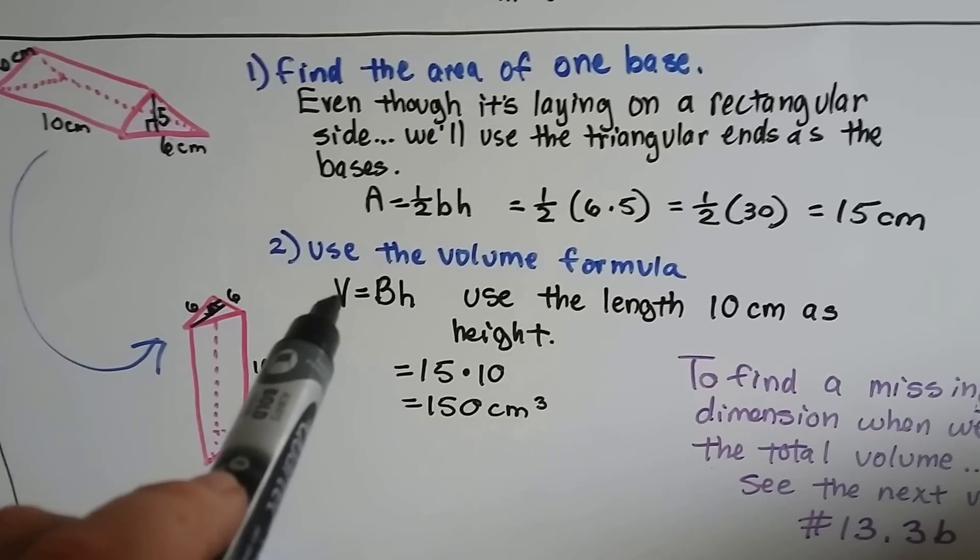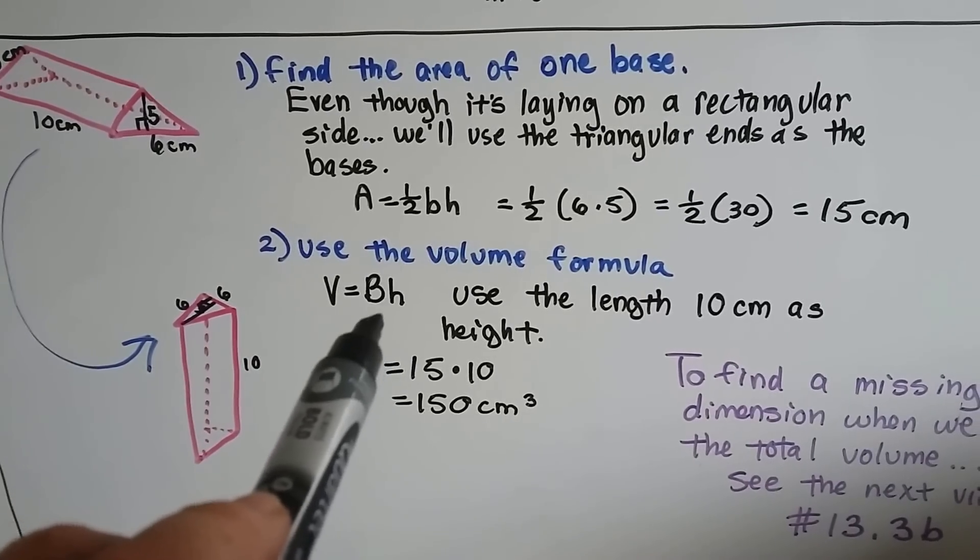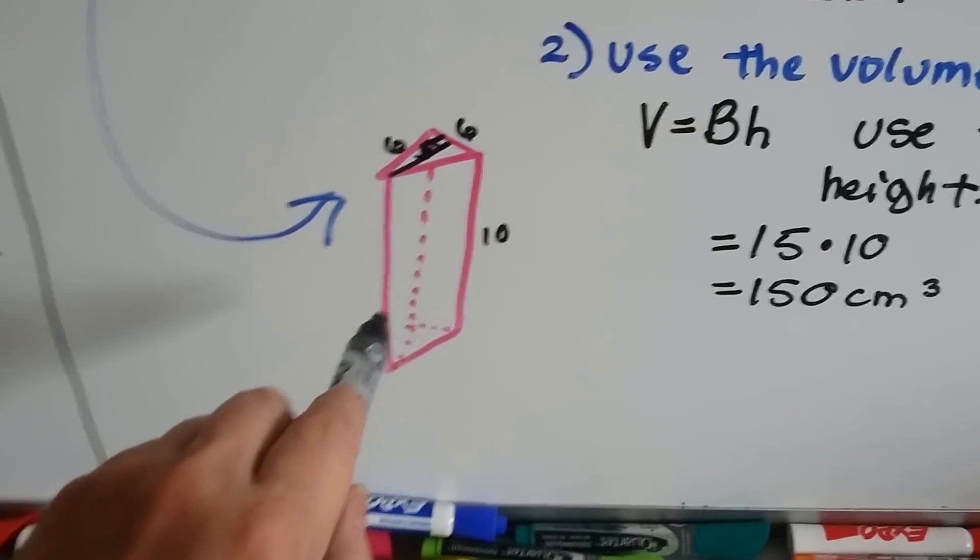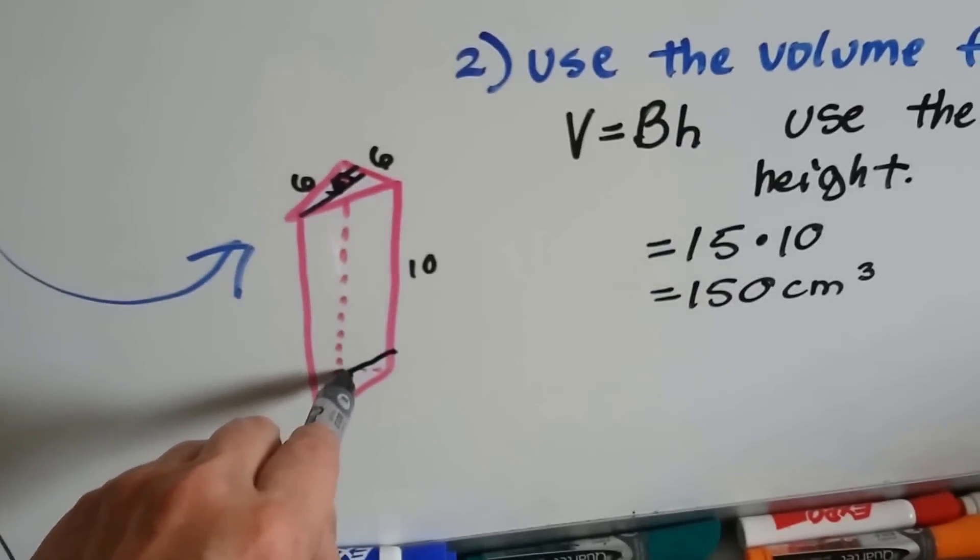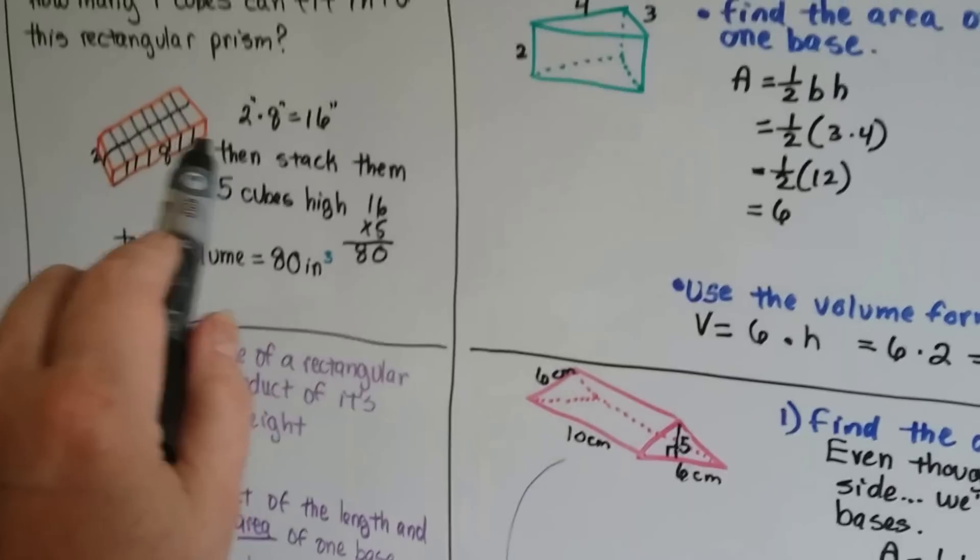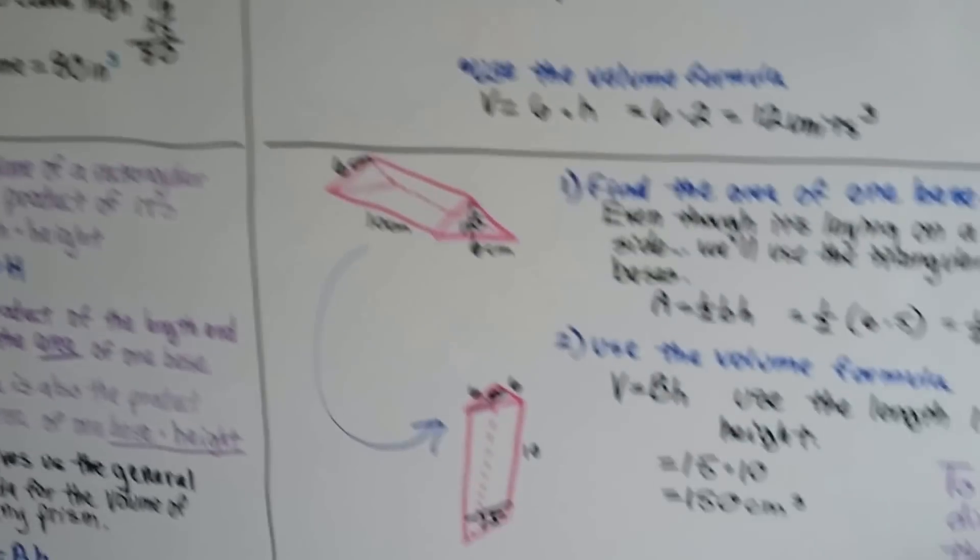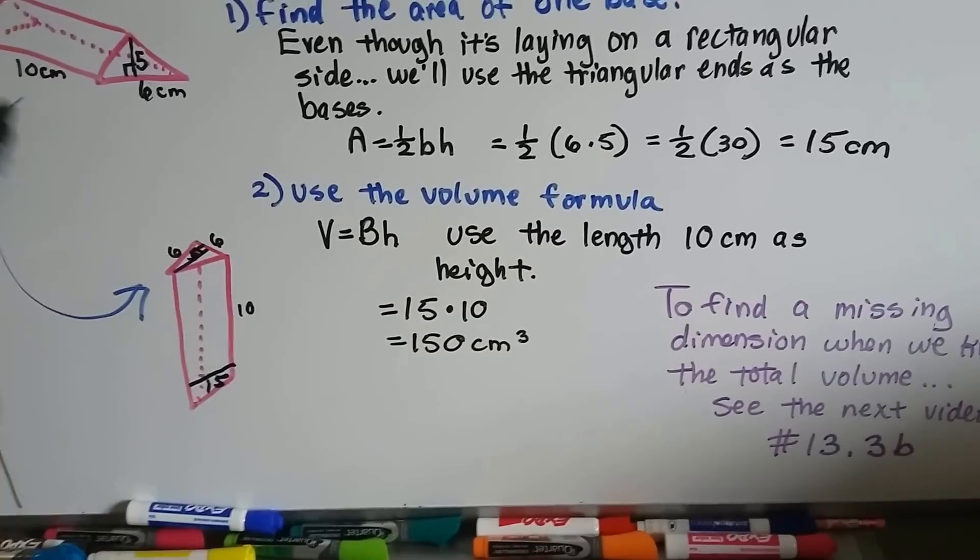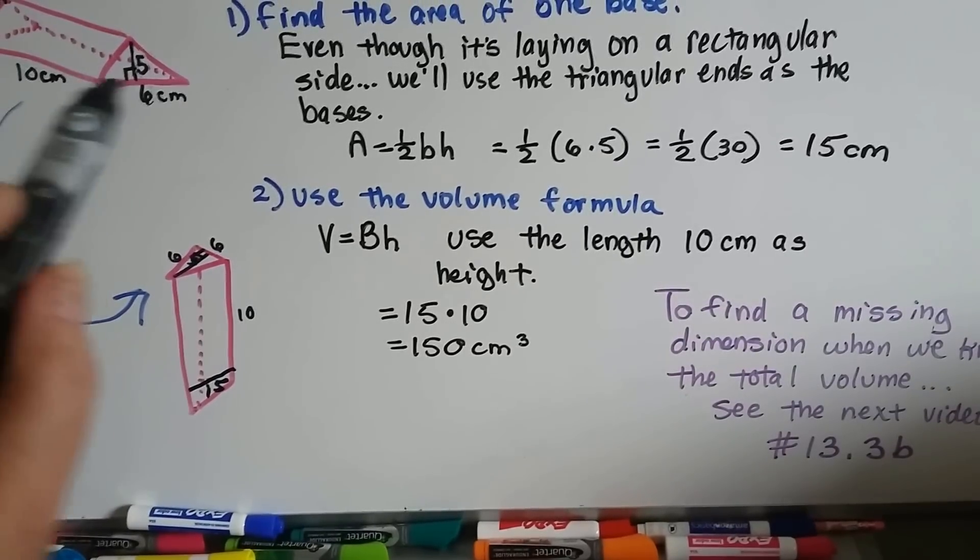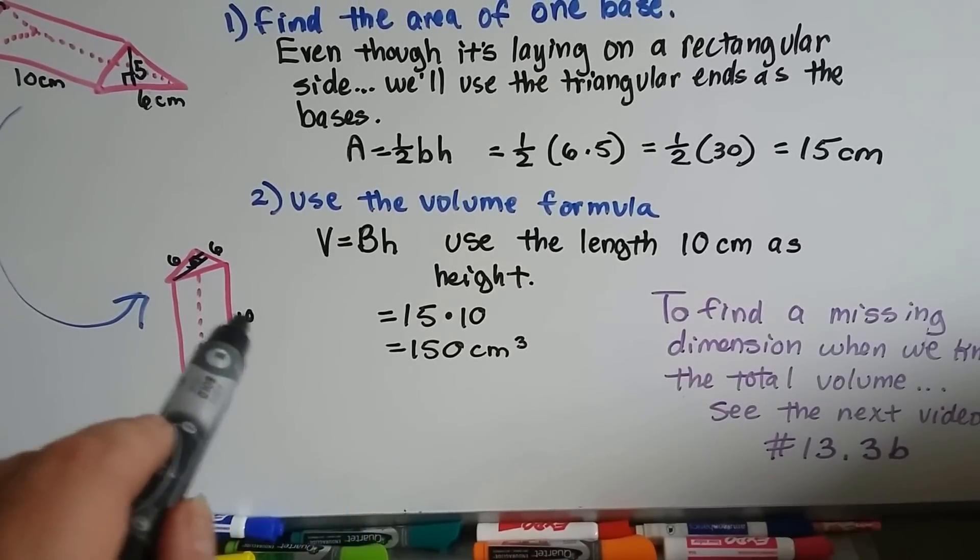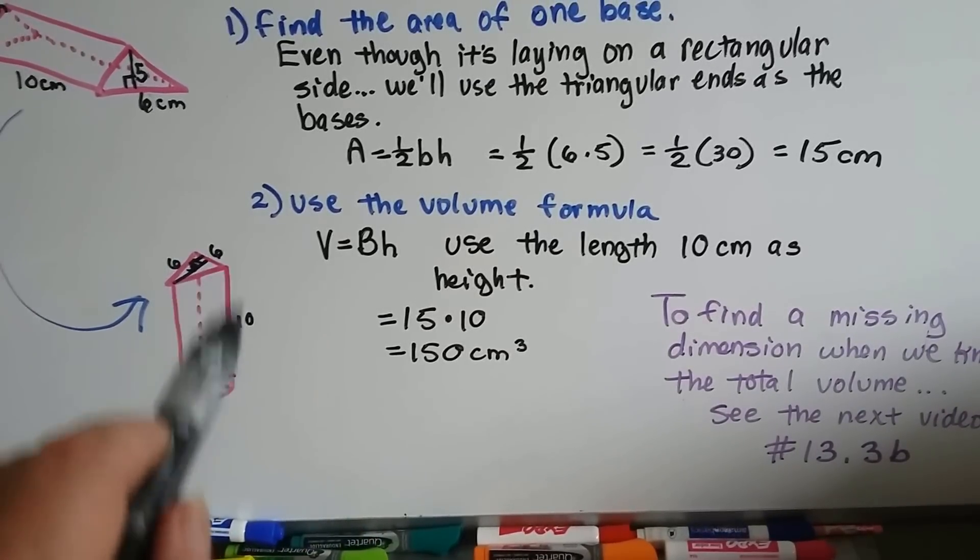We use the volume formula V = B·h. We've got one layer that's 15, just like we had one layer with 16 in the previous example. Now we use the length—the 10 centimeters—as the height h in the formula, because we haven't used it yet.